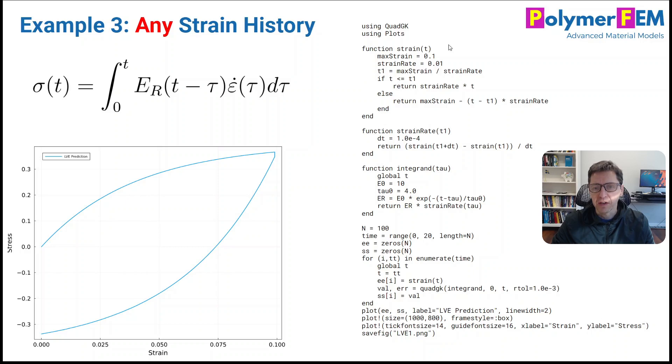So here is the function here. This is the strain. In this case, I loaded it up to a 10% strain and then I unloaded it. So that's just a mathematical implementation here of that load-unload. Then here's a function that gives me the strain rate. So I just do a numerical implementation of that. Of course, we need the strain rate here. And then the integrand calculates this value, this quantity here that we need to integrate over. So here's our integrand. It's just relaxation modulus times the strain rate.